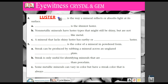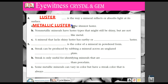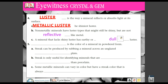Number one: luster is the way the mineral reflects or absorbs light at its surface. So how shiny something is, is its luster. For example, metallic luster is the shiniest luster of them all. Most metals will have this type of luster, some greater, some lesser. Non-metallic minerals might have a shiny luster, but most are not reflective like metal. And minerals that lack shiny luster have an earthy or what we call a dull luster.